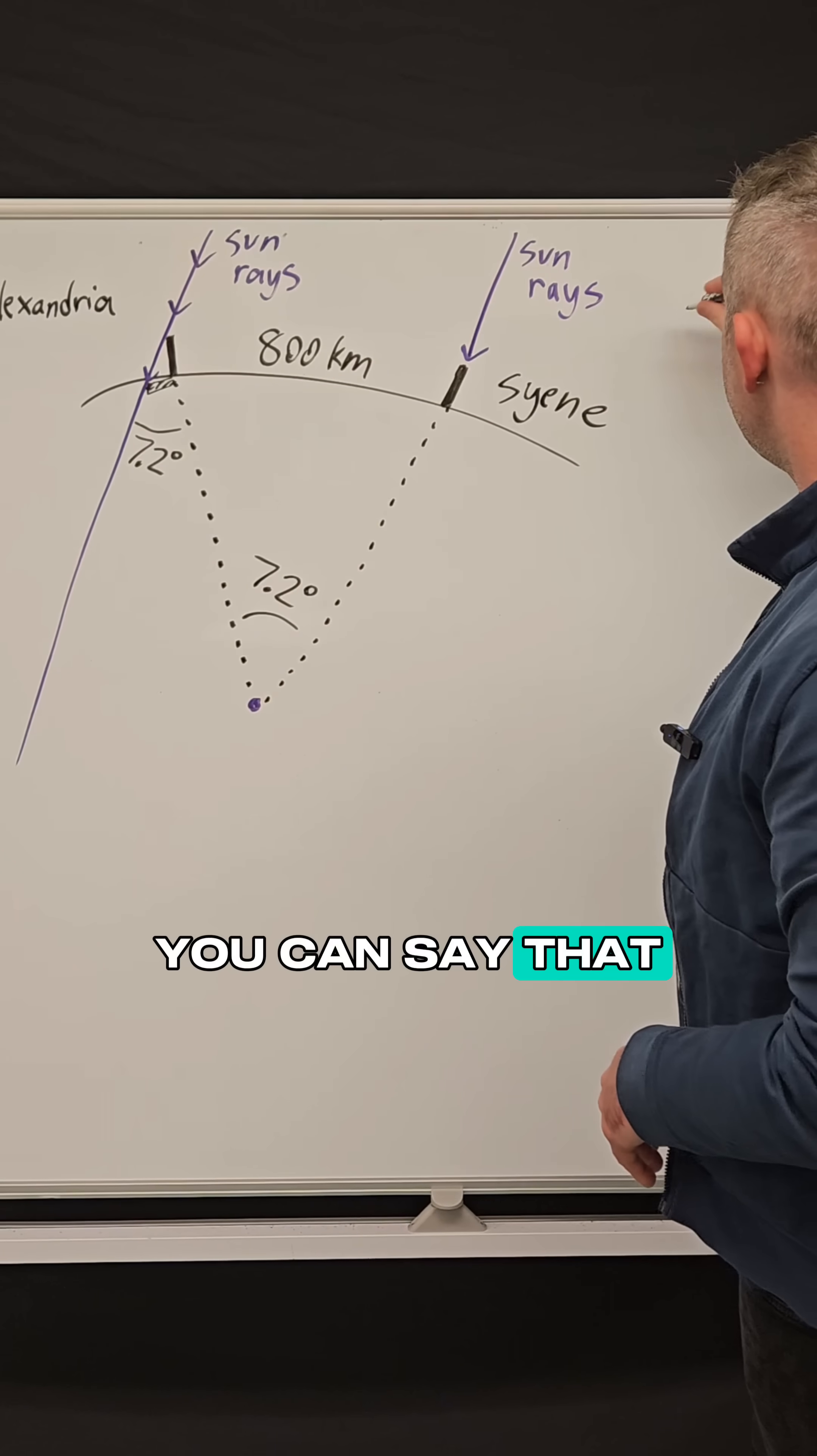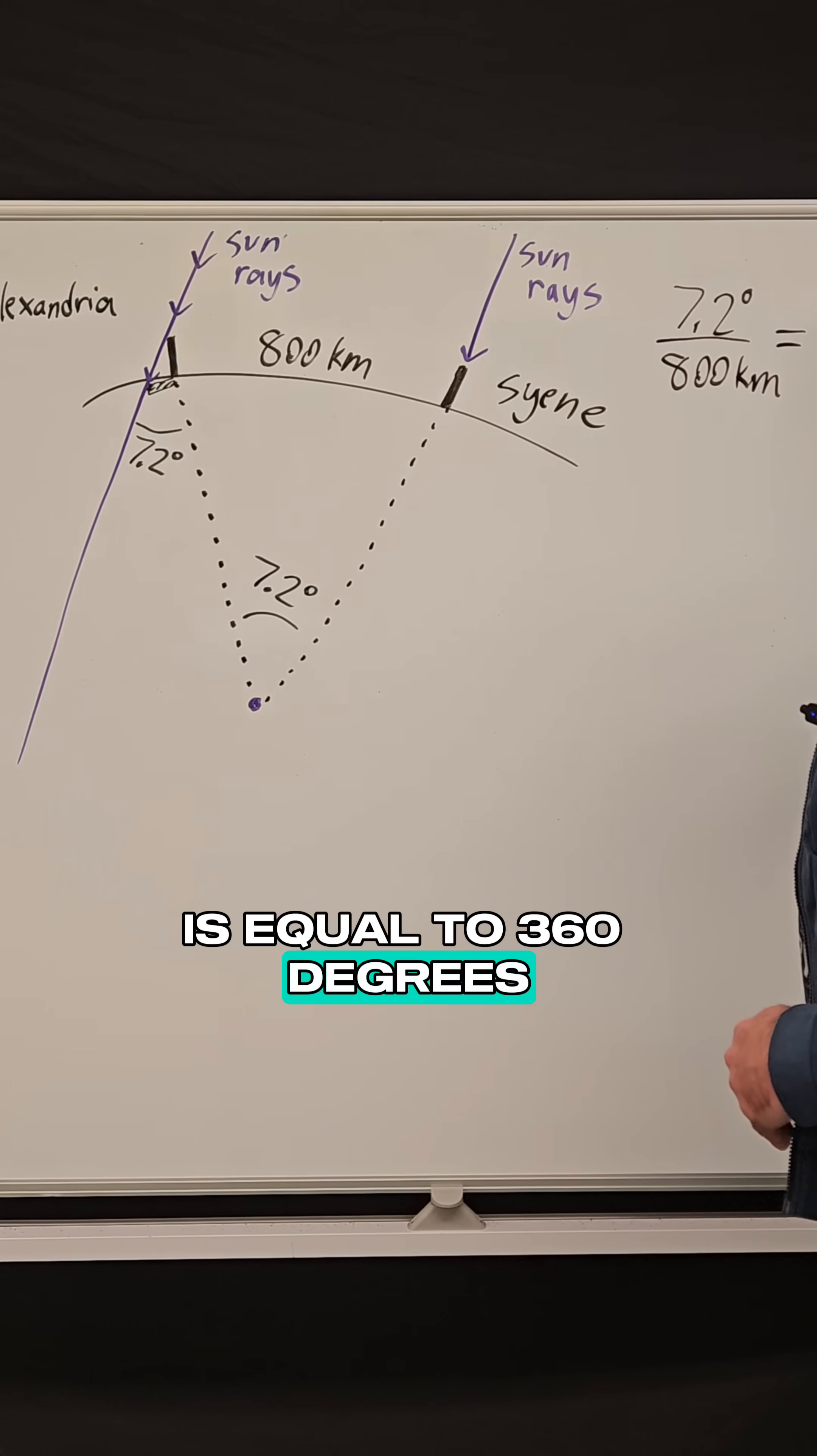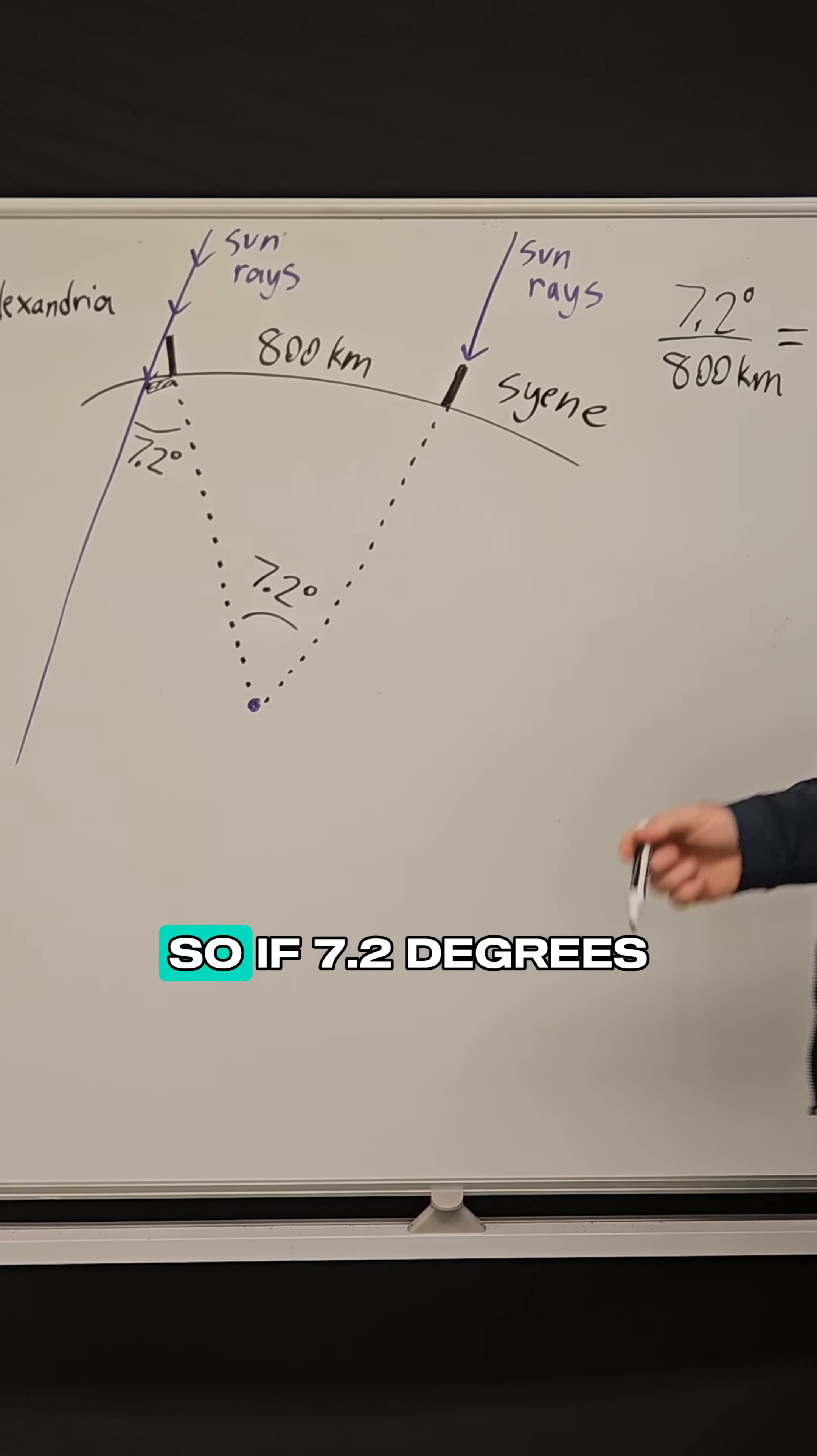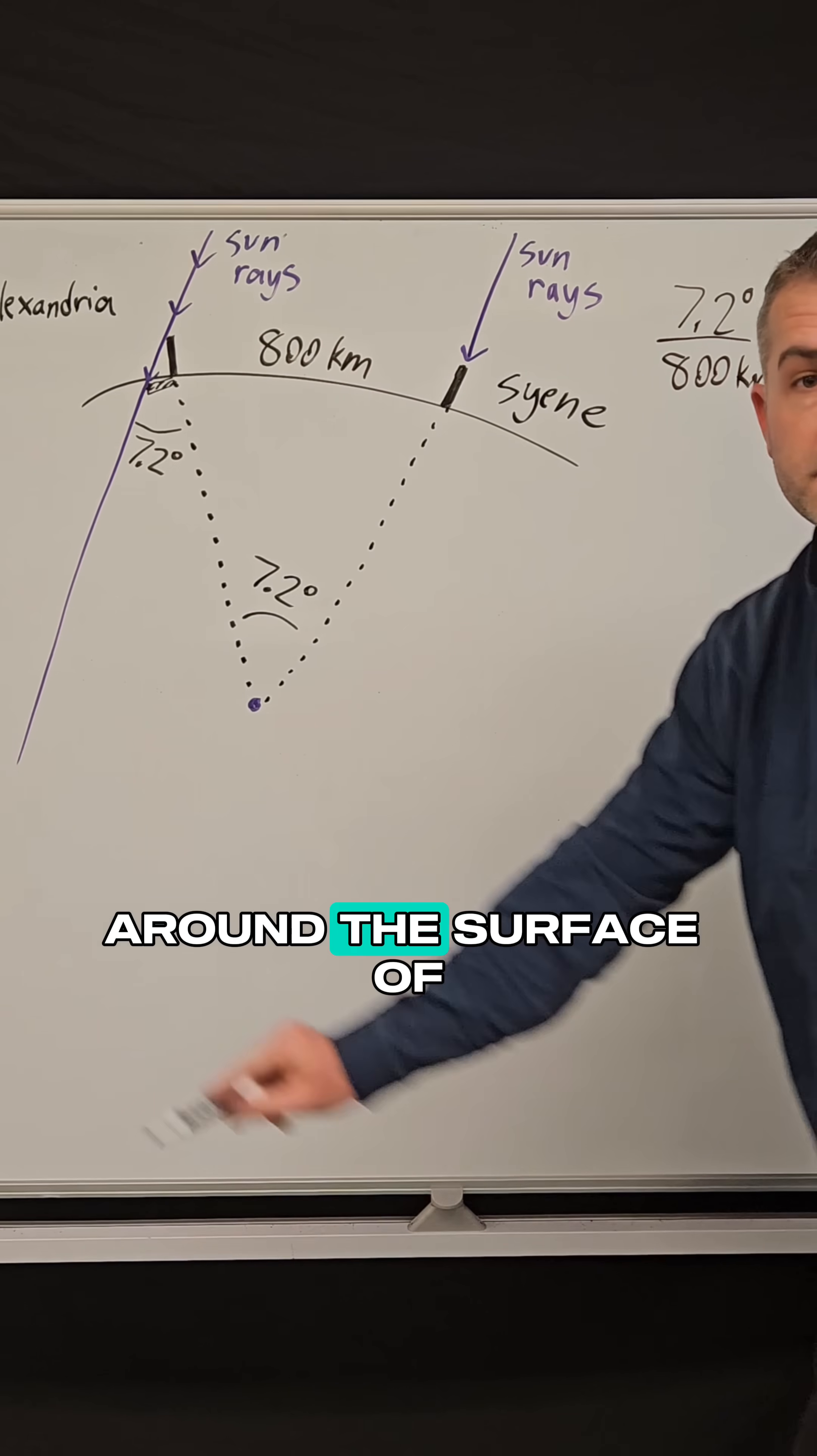You can say that 7.2 degrees over 800 kilometers is equal to 360 degrees, because that would be the entire distance around the planet, divided by C which is the circumference of the earth. So if 7.2 degrees corresponds to this distance between these two cities then 360 degrees corresponds to the entire distance around the surface of the earth.